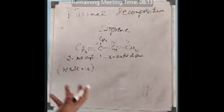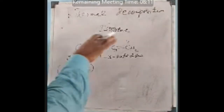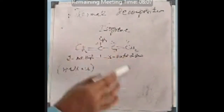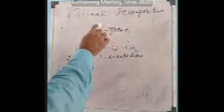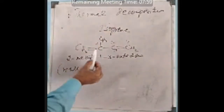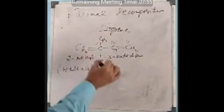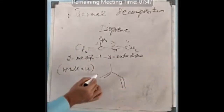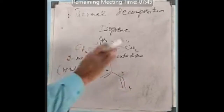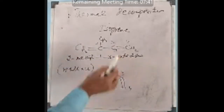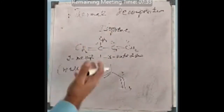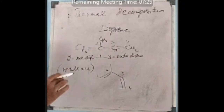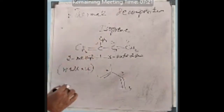When terpenoids are thermally decomposed, they commonly produce 2-methyl-1,3-butadiene as one of the units. Other compounds are also formed, but this is the common unit found in all thermally decomposed products of terpenoids. This compound is commonly known as isoprene — isoprene is 2-methyl-1,3-butadiene. This observation was first pointed out by Walash, and was given the name the isoprene rule.